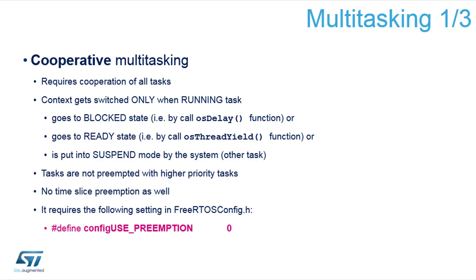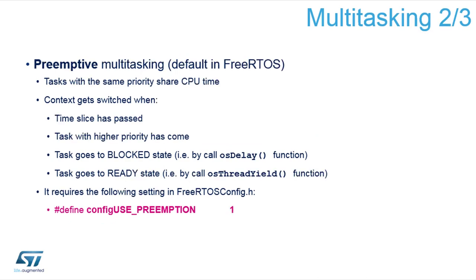A task can also be put into suspend mode by the system, typically by another task, or it can suspend itself. One advantage is that tasks are not preempted by tasks with a higher priority, so you get all the time you need to finish your own job. There is no time slicing implemented, so tasks don't switch periodically based on a time base. To enable cooperative mode, you have to disable preemption in the FreeRTOS config.